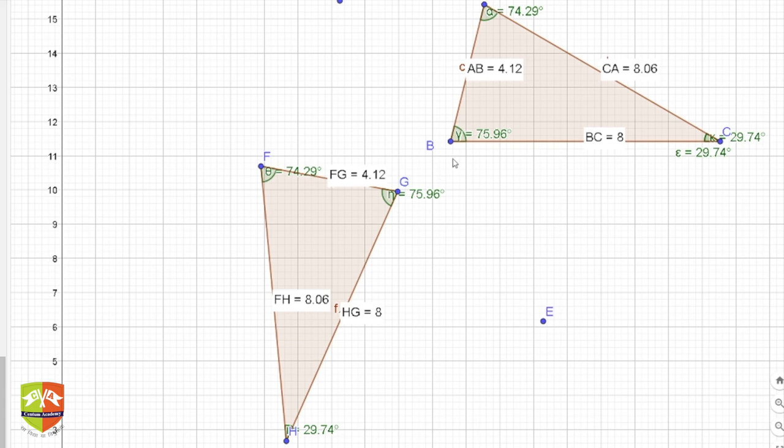Hence side GH equals BC, side FG equals AB, and side FH equals AC. Therefore, triangle ABC is congruent to triangle FGH. This is how you write congruent triangles. Going forward, we will study more properties related to congruent triangles.